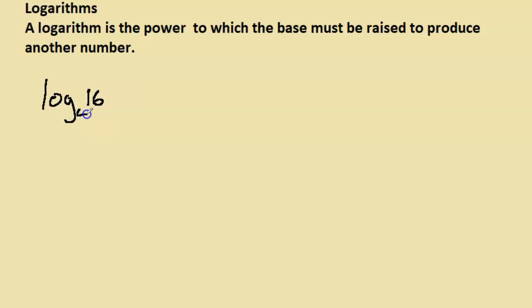For example, log 16 base 4. How do we read this? It is the power to which the base — in this case 4 — must be raised to get 16. So log 16 base 4 is equal to 2, because 4 to the power of 2 gives us 16.